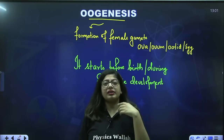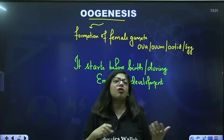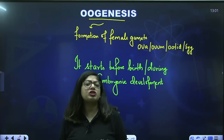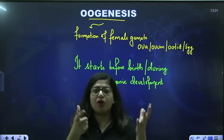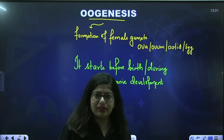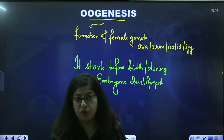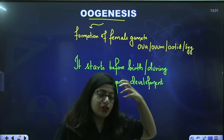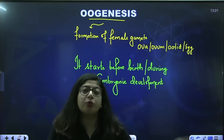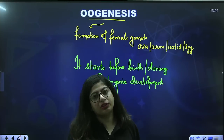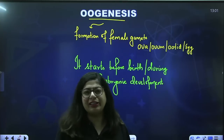You might ask: if oogenesis starts before birth, why do females get puberty around the same age as males? The reason is hormones — hormones need to be there to trigger the process. Don't worry, you will get to know everything in detail.